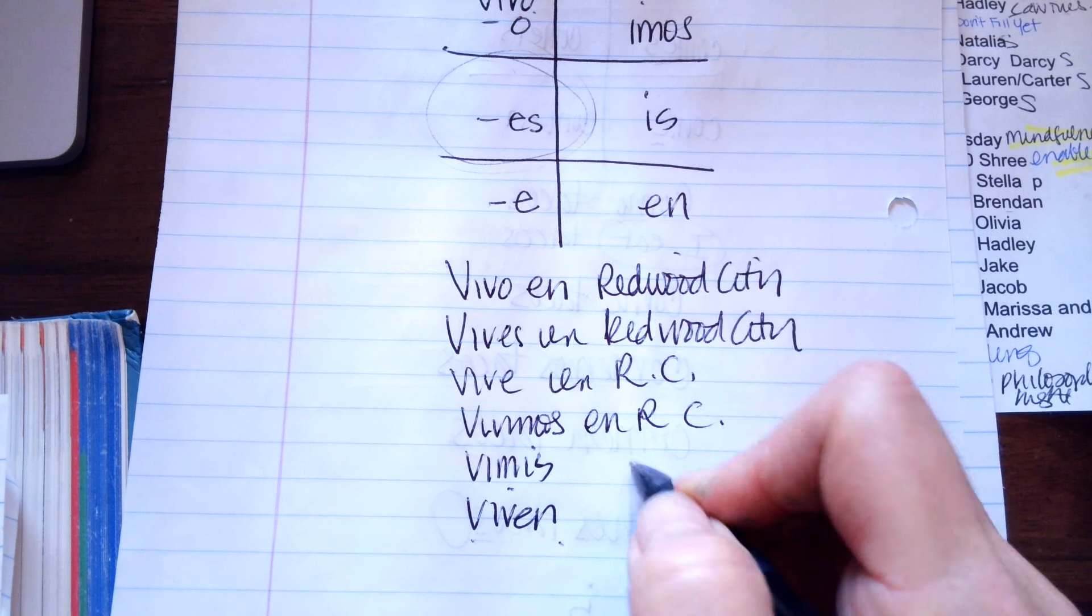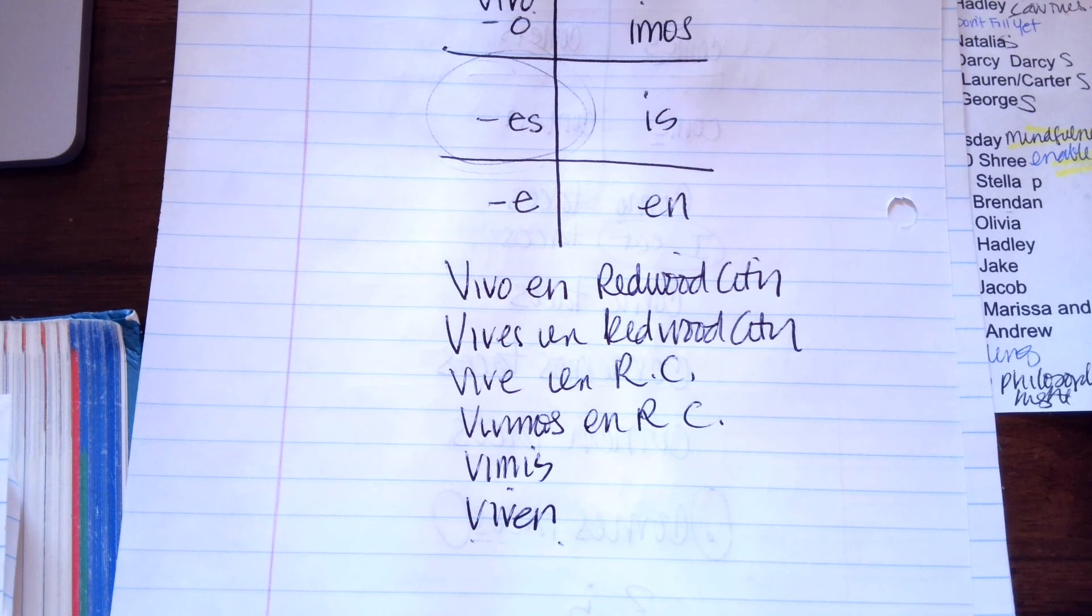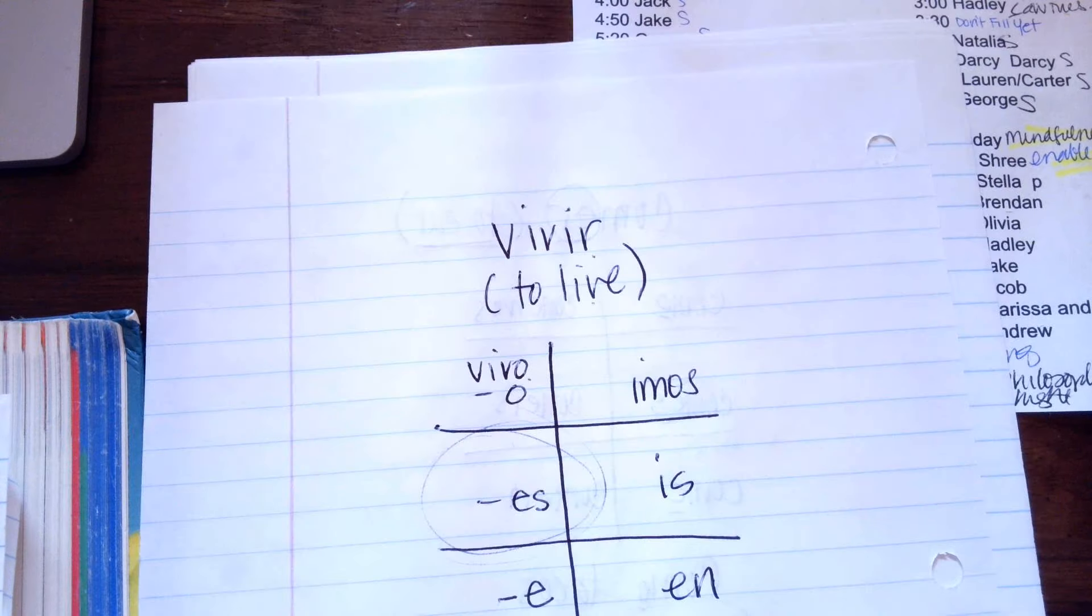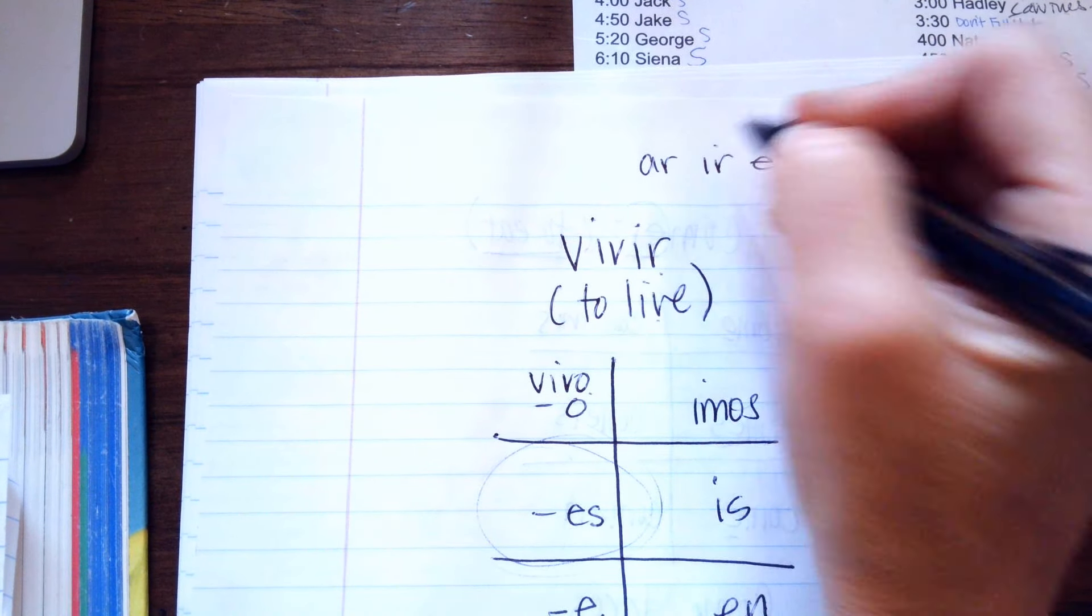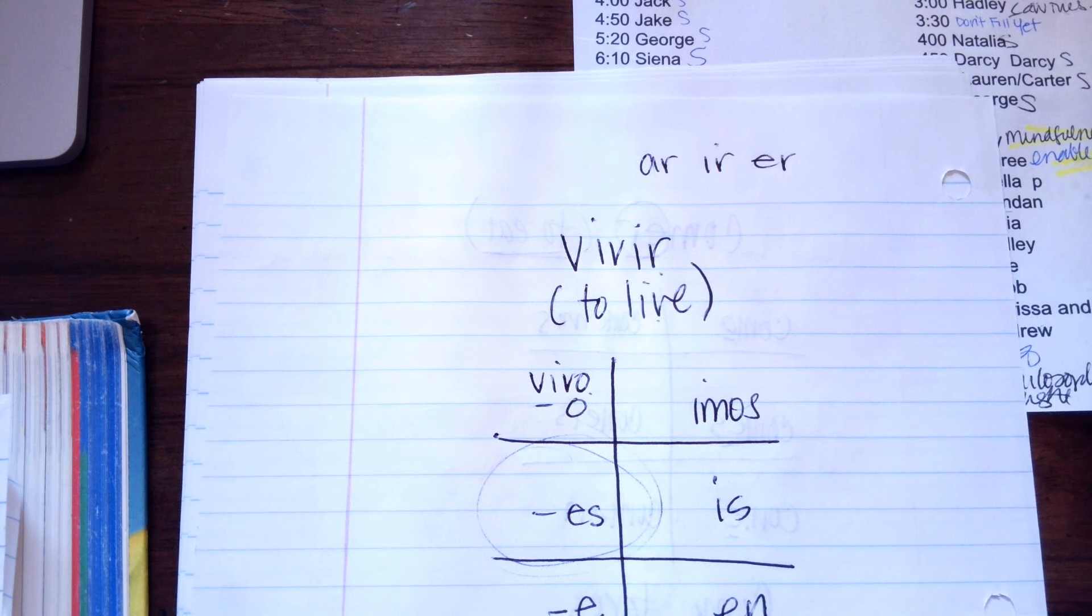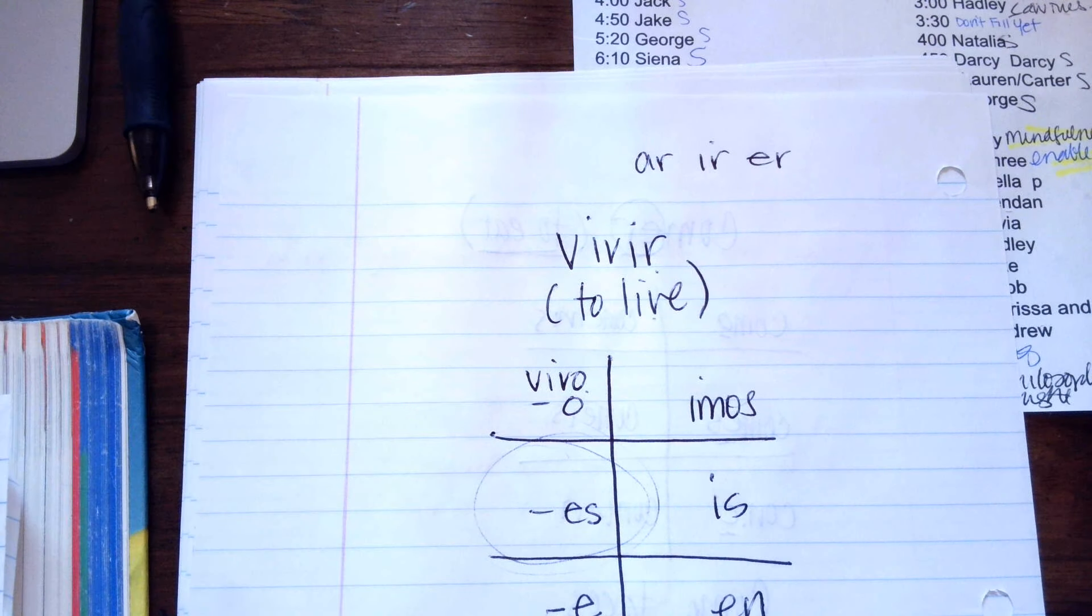Okay, so those are the three main types of verbs. A verb is either going to end in AR, IR, or ER. Now, I won't get into it, but there's crazy ones, just like in our language, but not very much.